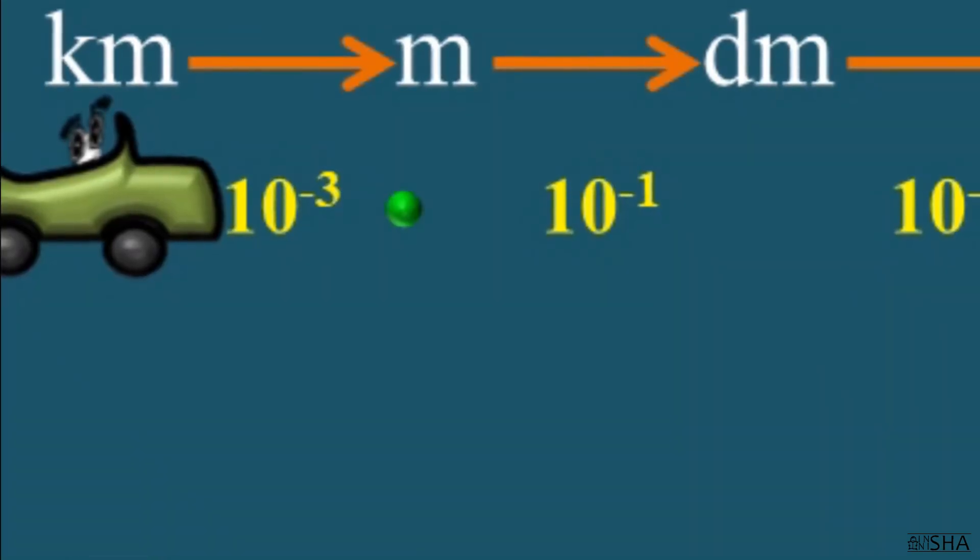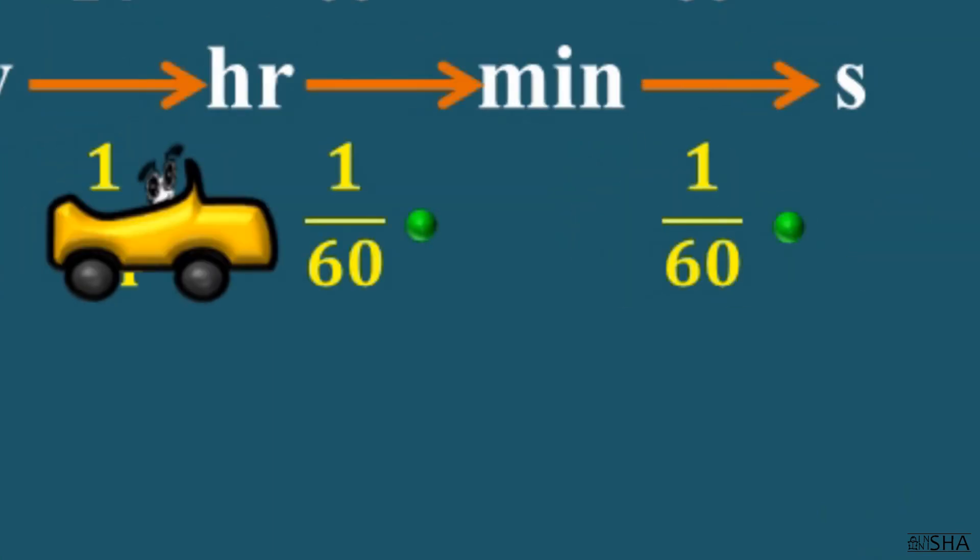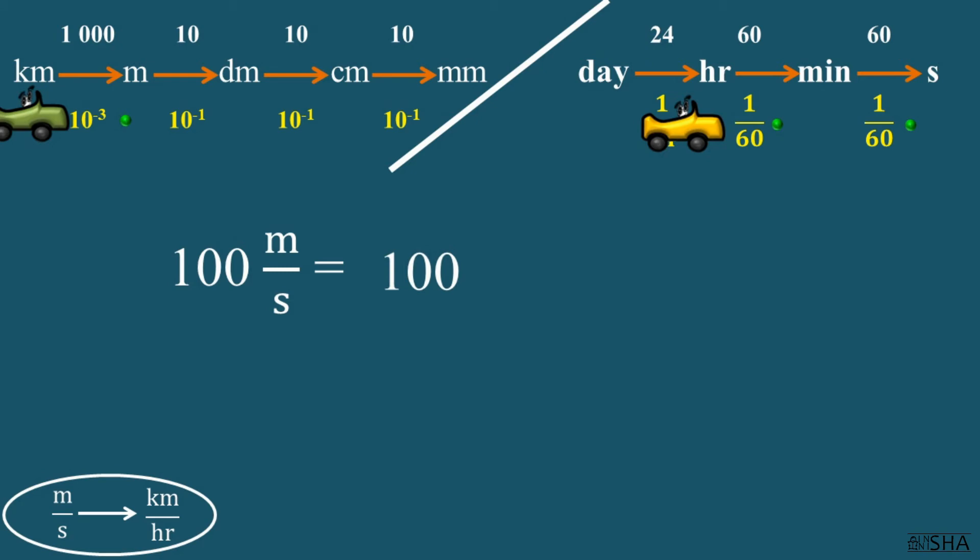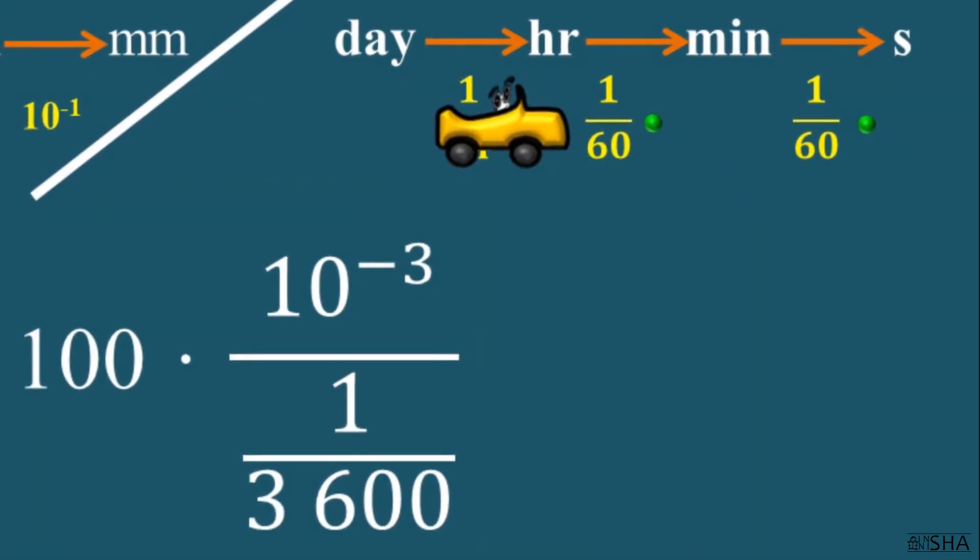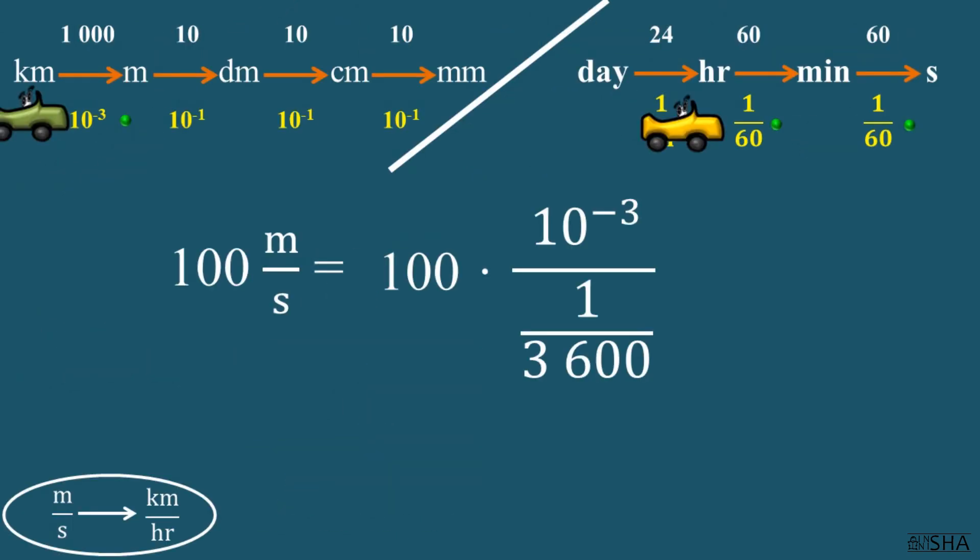In the numerator of the fraction, we will convert meters to kilometers. And in the denominator, seconds to hours. 100 must be multiplied by 10 to the negative third power. Take a look at the time chain. A second equals 1 over 3600 hours. So we write it down in the denominator of the fraction.